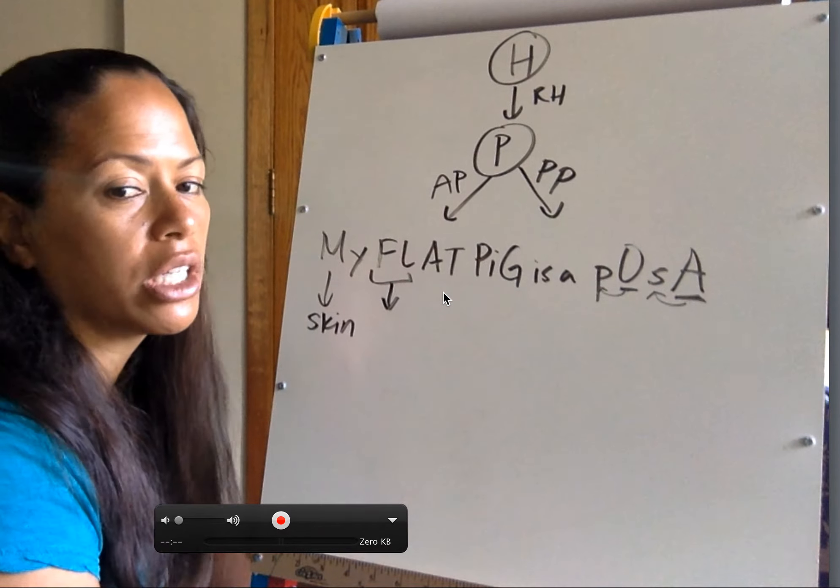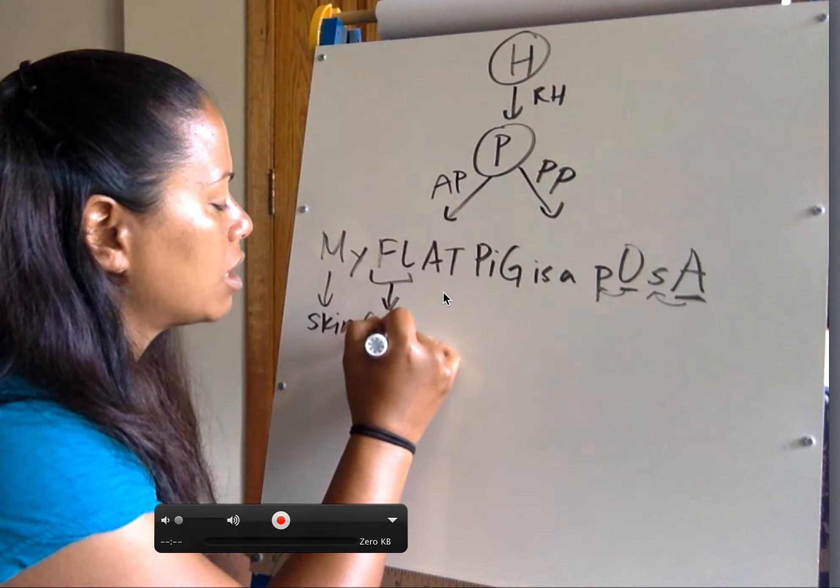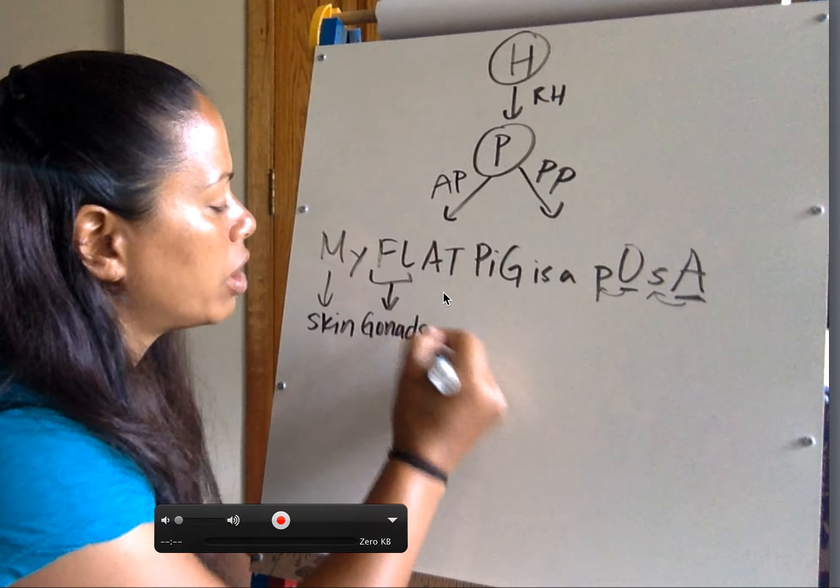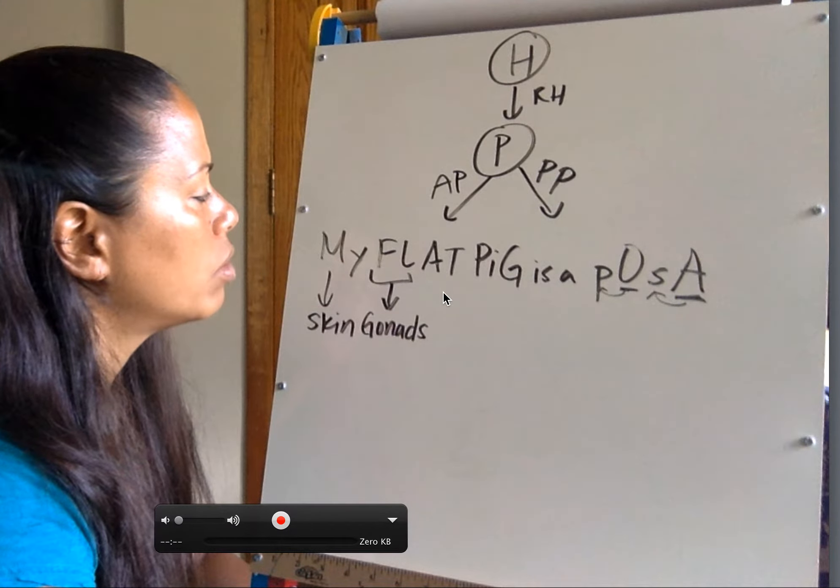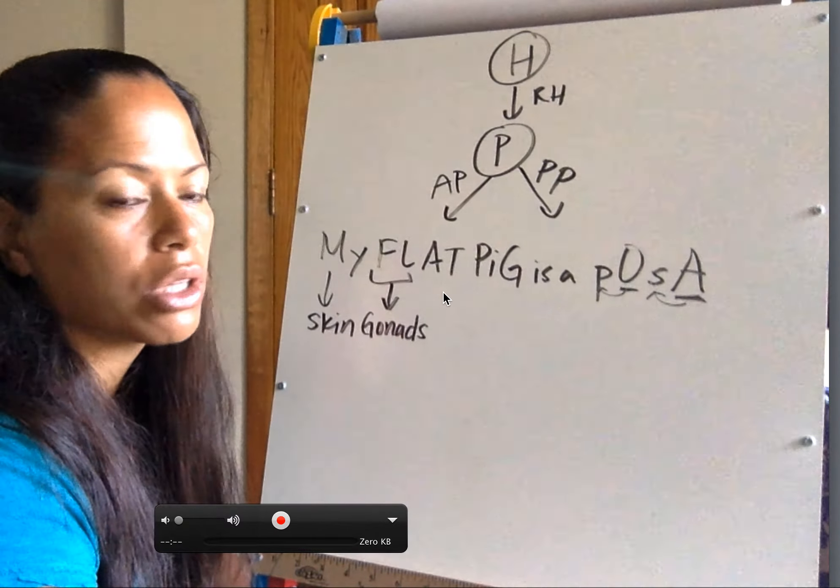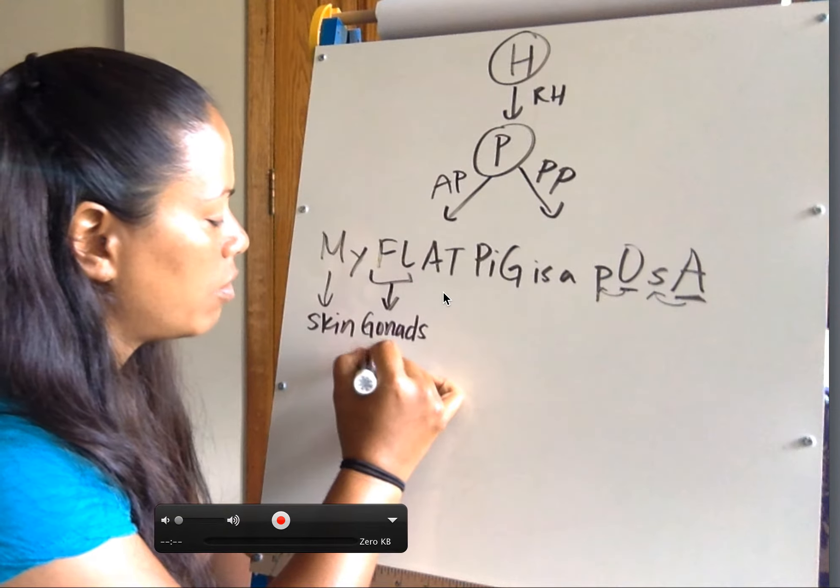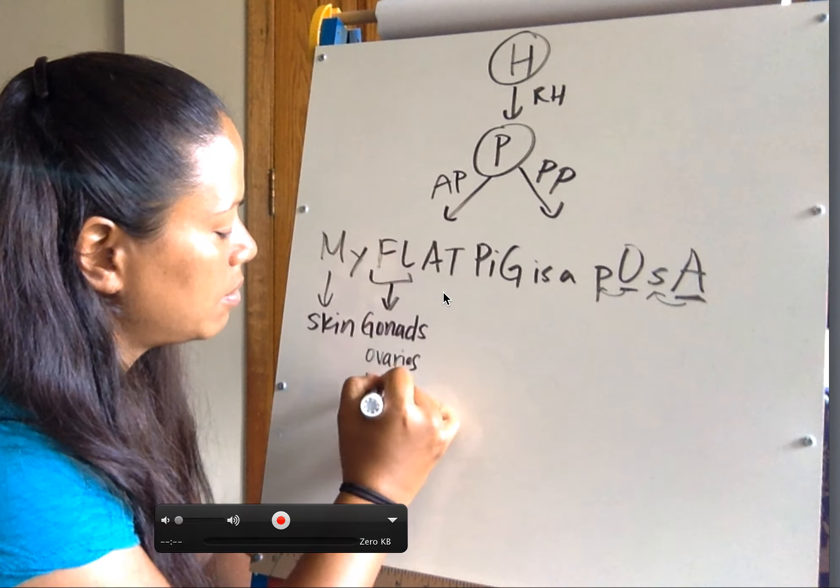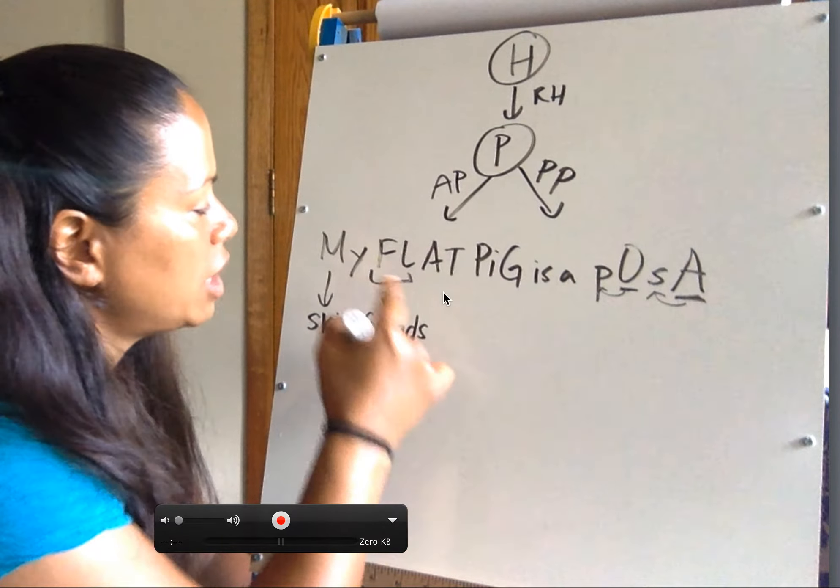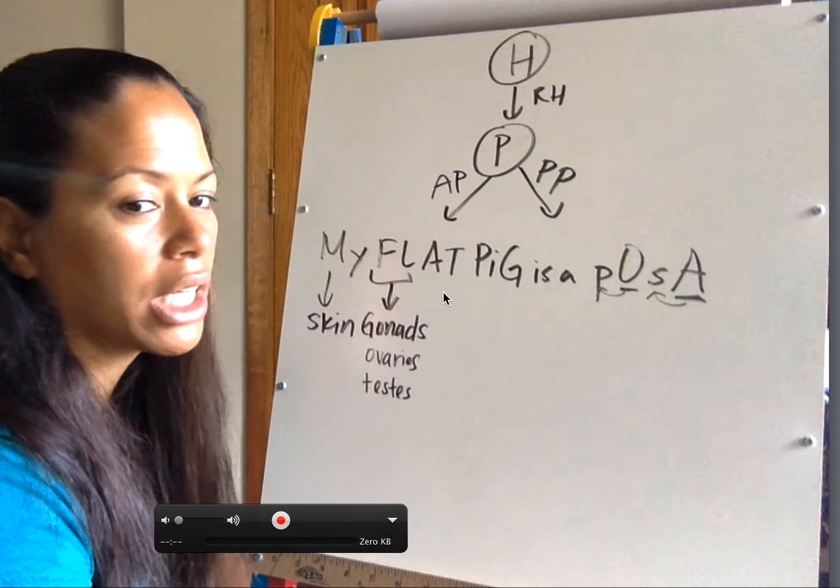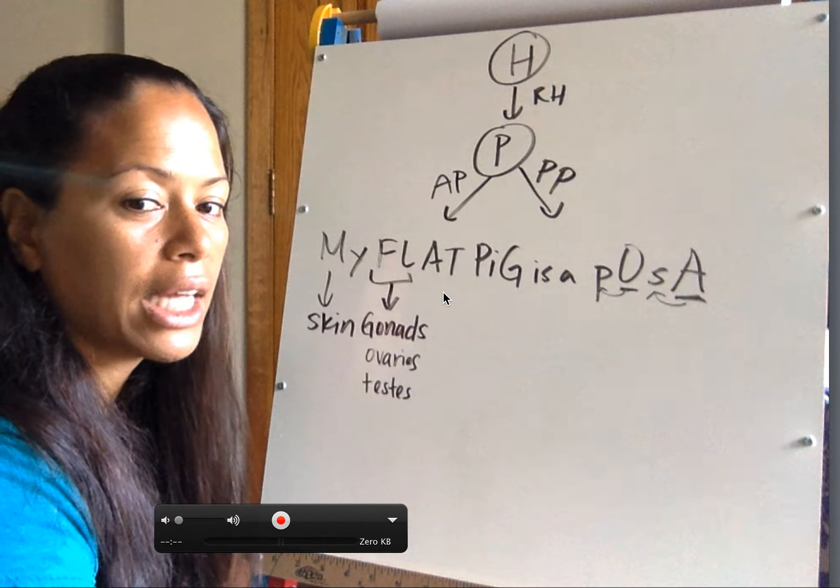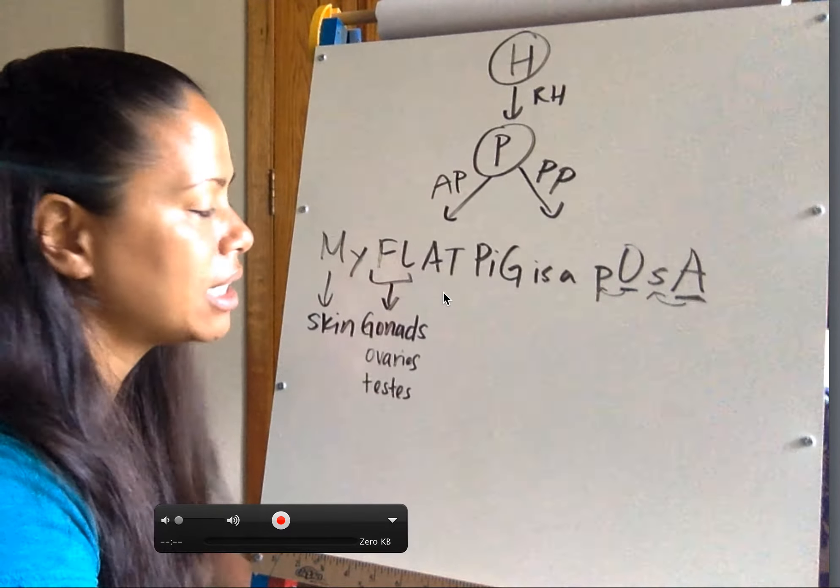FSH and LH for now, we're going to just keep it simple and we say that it acts on the gonads. When we hit the reproductive system, then we'll be a little bit more specific on what their functions are. In the gonads, what are the two gonads? We have the ovaries and then we also have the testes. FSH and LH can be associated with ovaries and estrogen, as well as testes and testosterone.